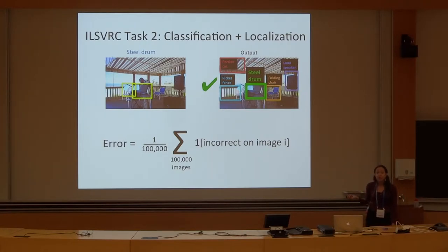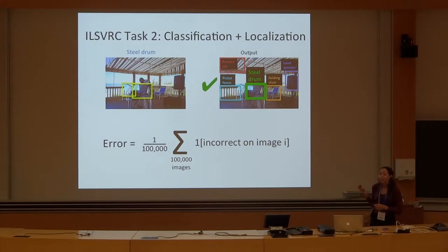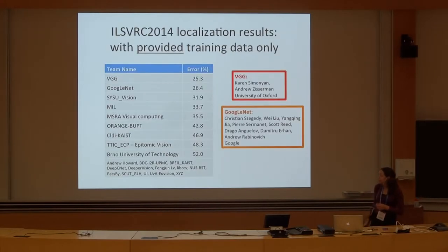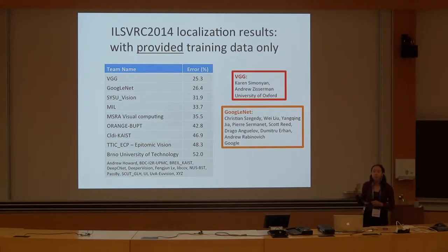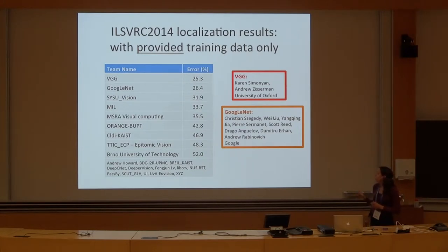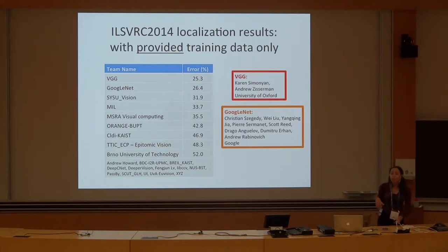So this is the second main task in the ImageNet Challenge this year, and I'm going to show the results. This is the image and localization task provided with training data, so teams can use the data that we supply to the challenge. The winner of this task was the Visual Geometry Group of Oxford, and the runner-up was Google.